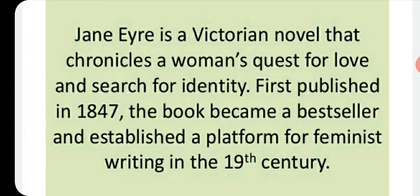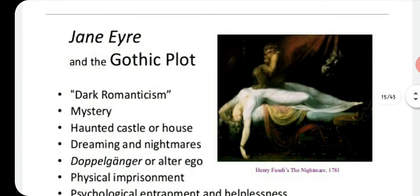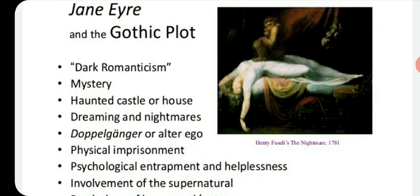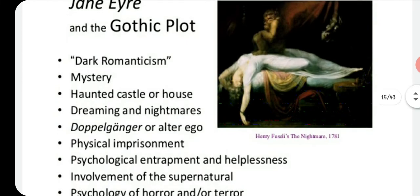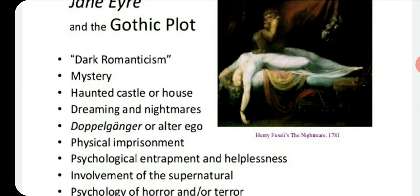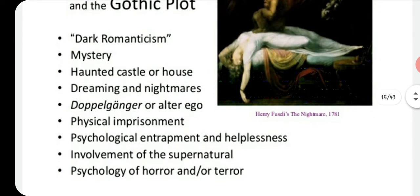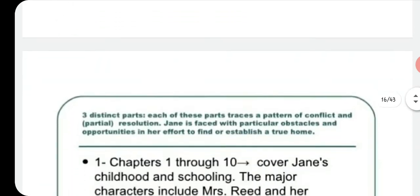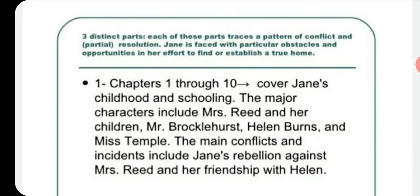The gothic plot of Jane Eyre includes several key elements: dark romanticism, mysterious scenes and thoughts, haunted castles or houses, dreaming and nightmares, the doppelganger or alter ego, physical imprisonment — as seen in the red room where Jane is imprisoned — psychological entrapment, helplessness, involvement of the supernatural, and the psychology of horror and terror.